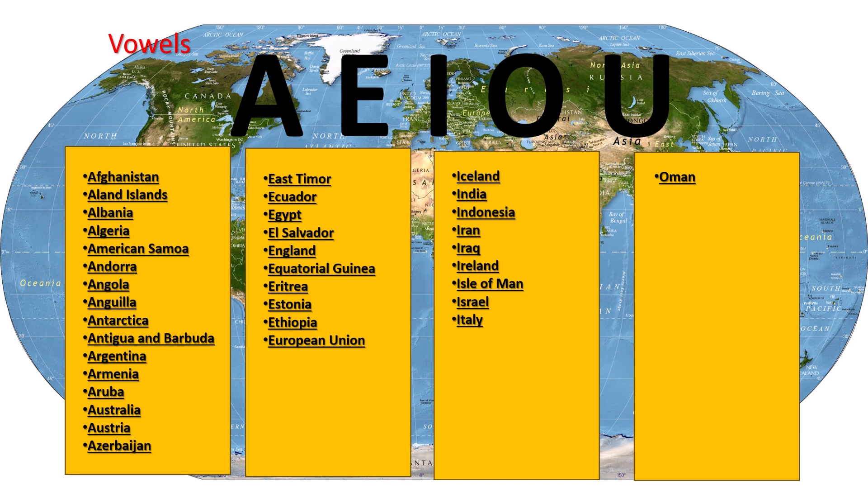With I, we have Iceland, India, Indonesia, Iran, Iraq, Ireland, the Isle of Man, and Israel and Italy.